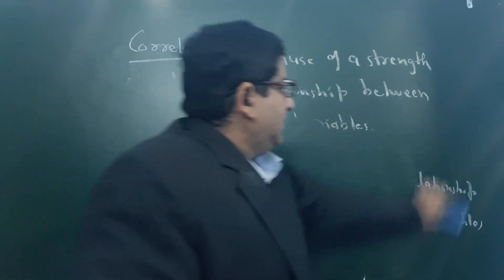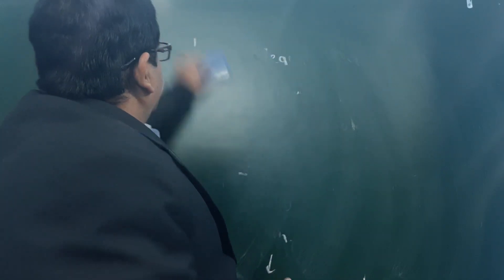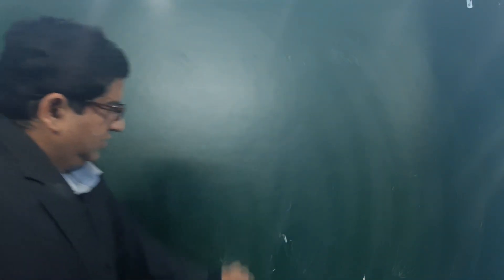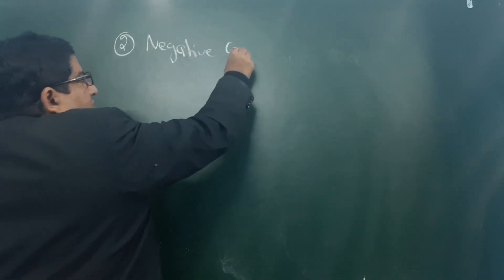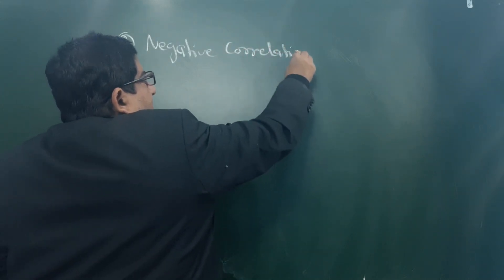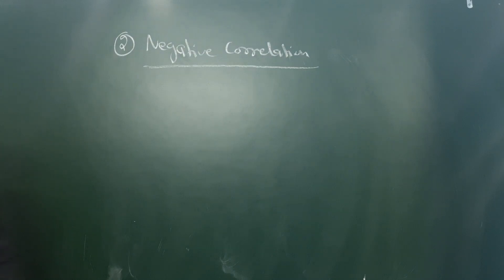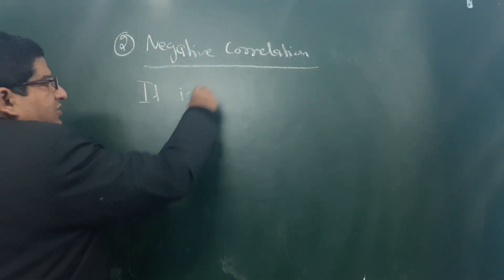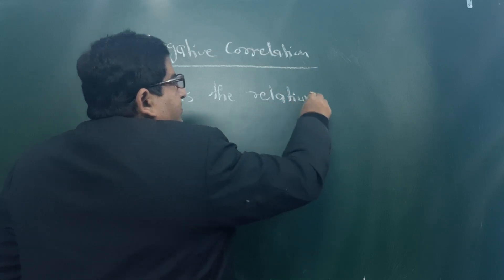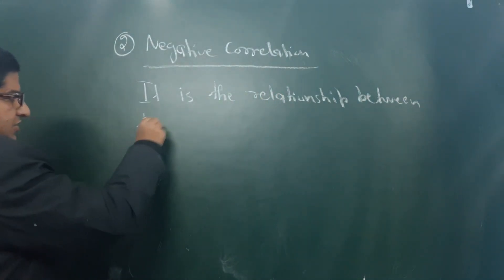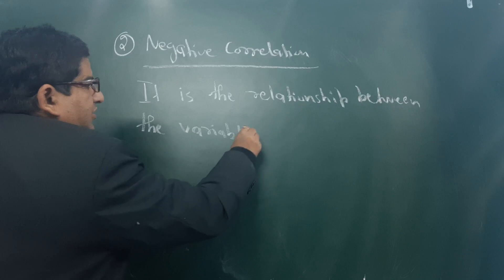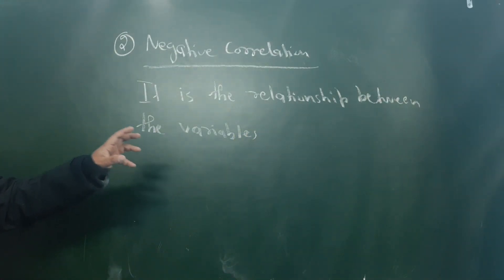The next point is negative correlation. Now I am telling you what is negative correlation. Negative correlation is the relationship between variables in which both variables move in the opposite direction.